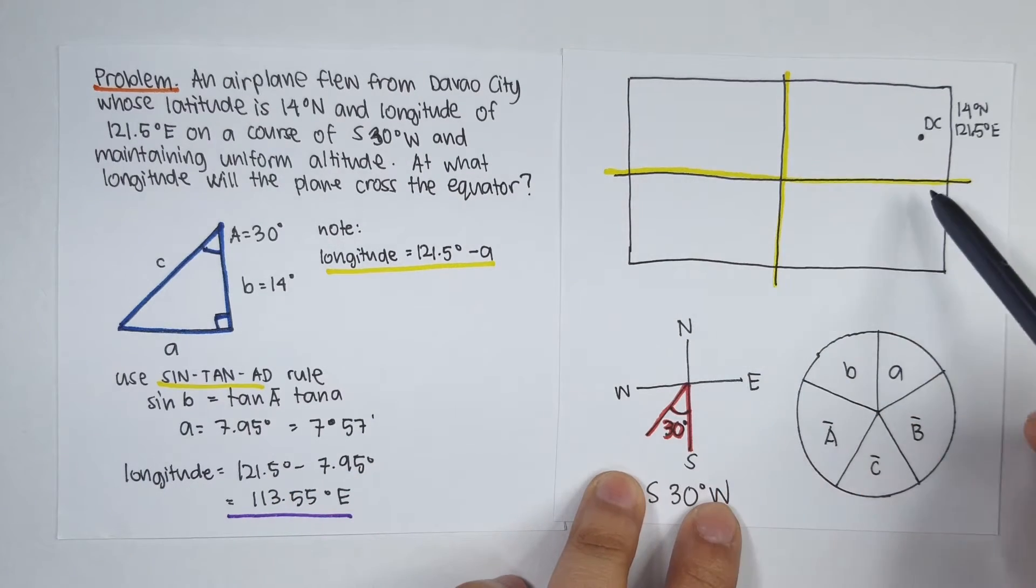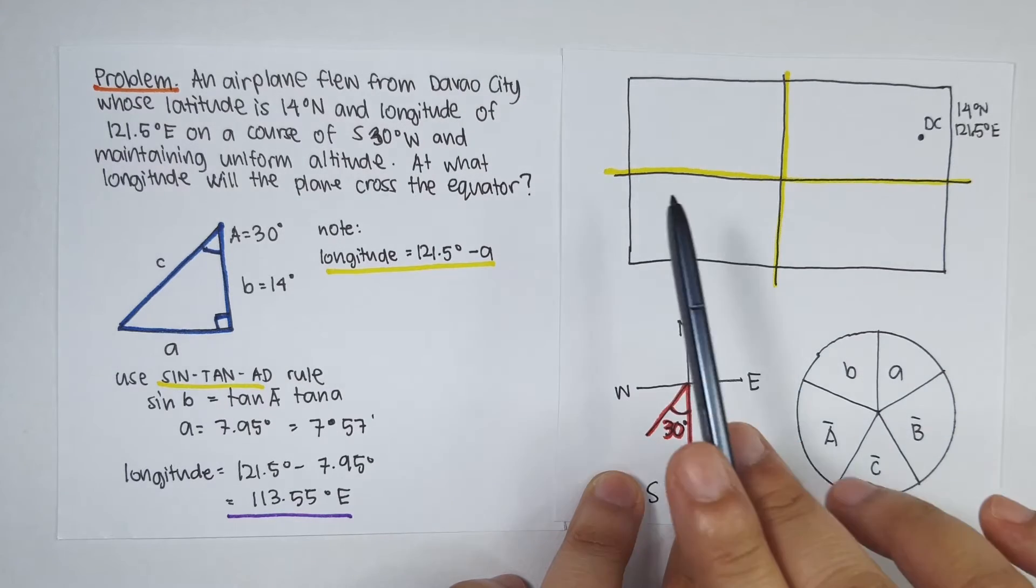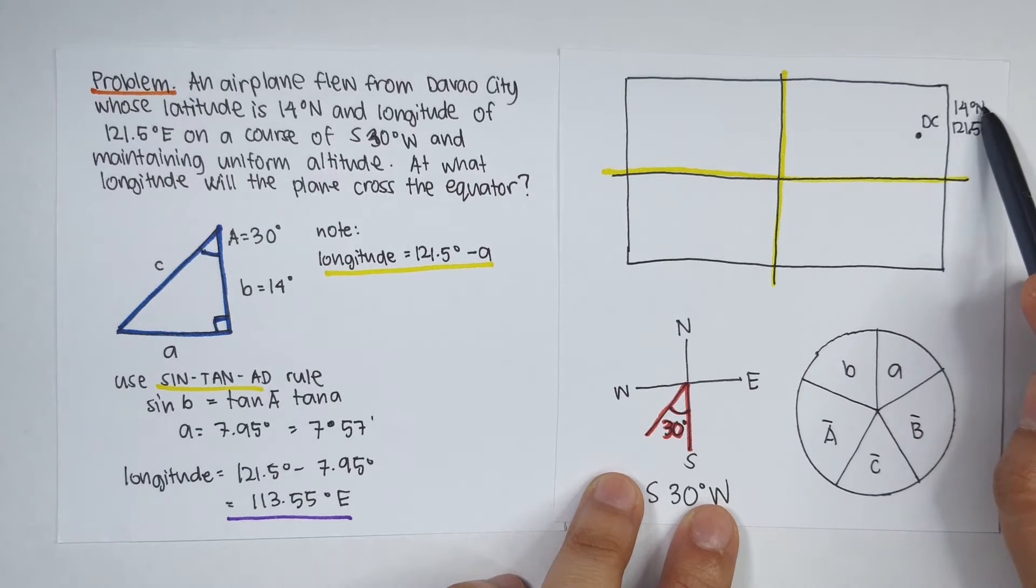So say for example, this is our world map and this is our prime meridian where longitude is 0 degrees. This is the equator where latitude is 0 degrees. And this is Davao City at 14 degrees north and 121.5 degrees east.